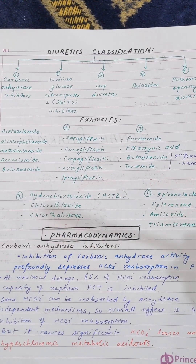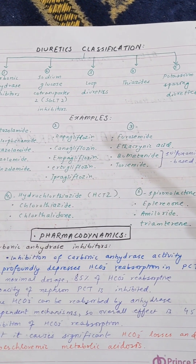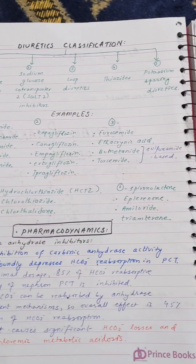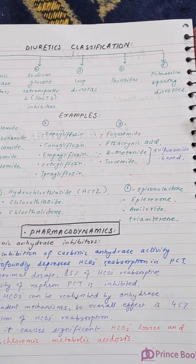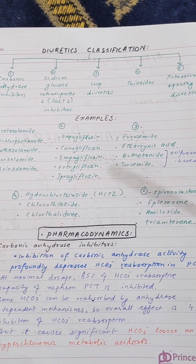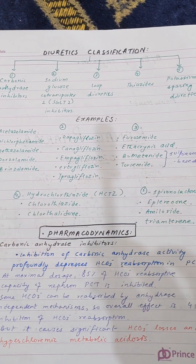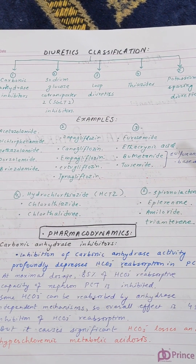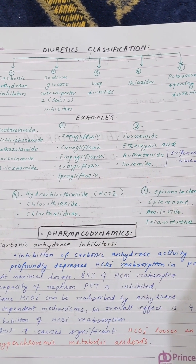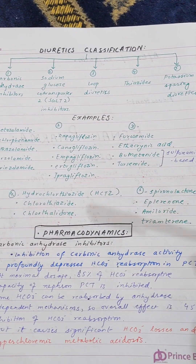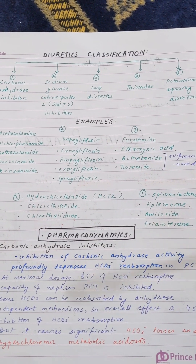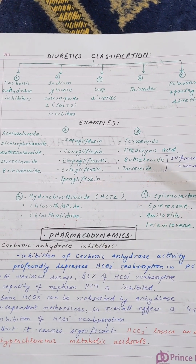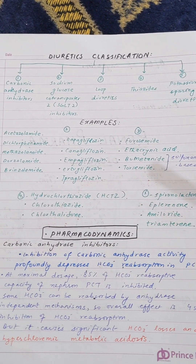The four main classes at the top are carbonic anhydrase inhibitors, loop diuretics, thiazides, and potassium-sparing diuretics. SGLT2 inhibitors are also very important — we covered their pharmacodynamics and uses, as they are used in diabetes treatment and have a secondary diuretic effect.